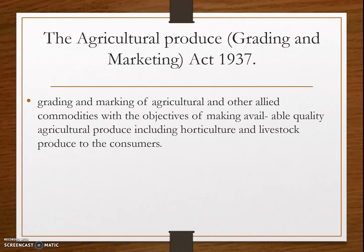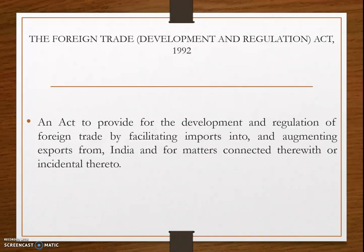The Agriculture Produce Grading and Marketing Act 1937 aims at grading and marking of agriculture and other allied commodities, with the objective of making quality agricultural produce — including horticulture and livestock produce — available to consumers.